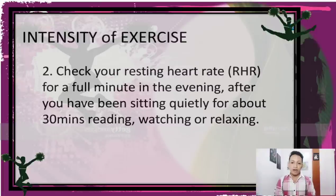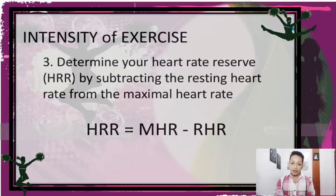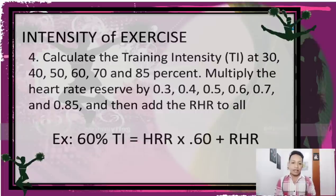Step two: check your resting heart rate (RHR) for a full minute in the evening after sitting quietly for about 30 minutes reading, watching, or relaxing. Step three: determine your heart rate reserve (HRR) by subtracting the resting heart rate from the maximal heart rate — HRR equals MHR minus RHR. Step four: calculate the training intensity (TI) at 30, 40, 50, 60, 70, and 85% by multiplying the HRR by 0.3, 0.4, 0.5, 0.6, 0.7, and 0.85 respectively, then add the RHR to each result.